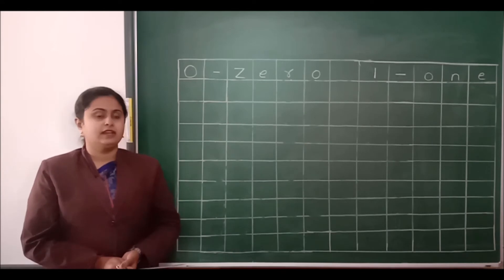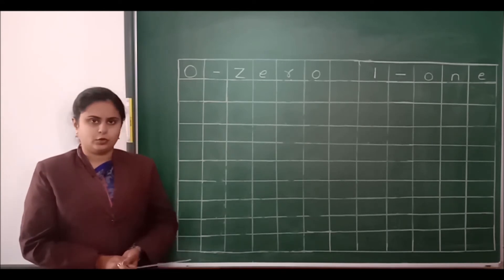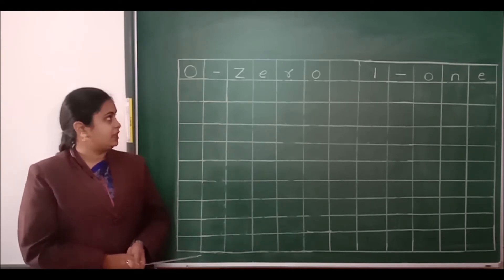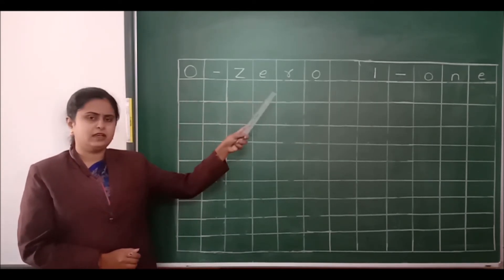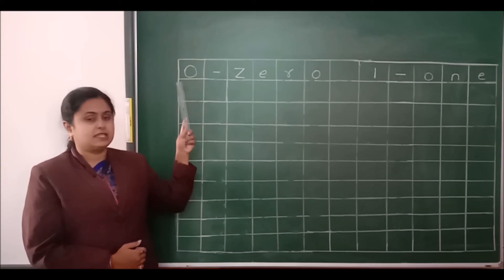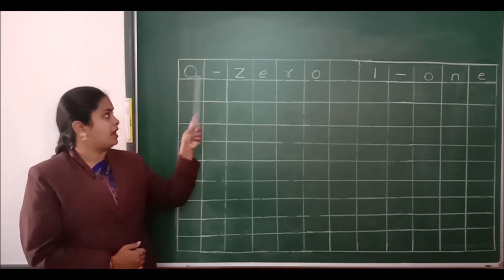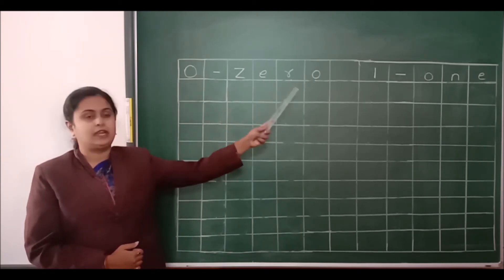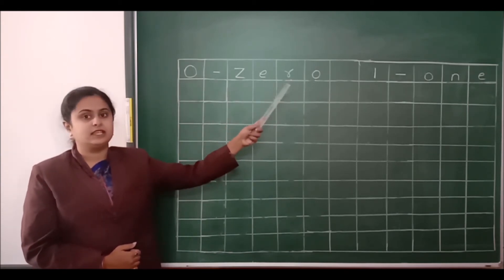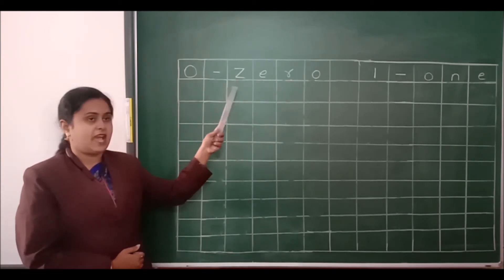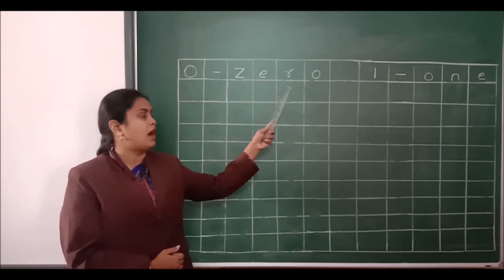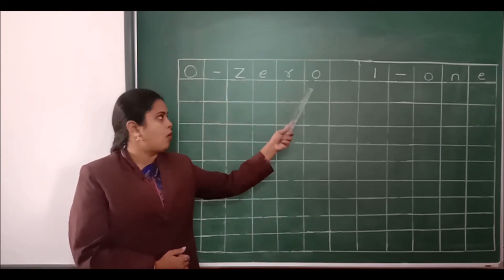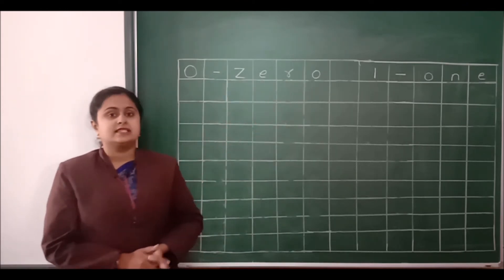Children, look at the board. See there, what is written here? This is number 0. And this is the spelling of 0: Z, E, R, O — zero.